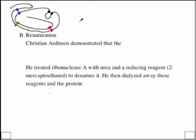The landmark experiment done by Christian Anfinsen utilized a bovine enzyme called ribonuclease A. What he did was he took this enzyme and put it in the presence of urea in order to denature the enzyme.